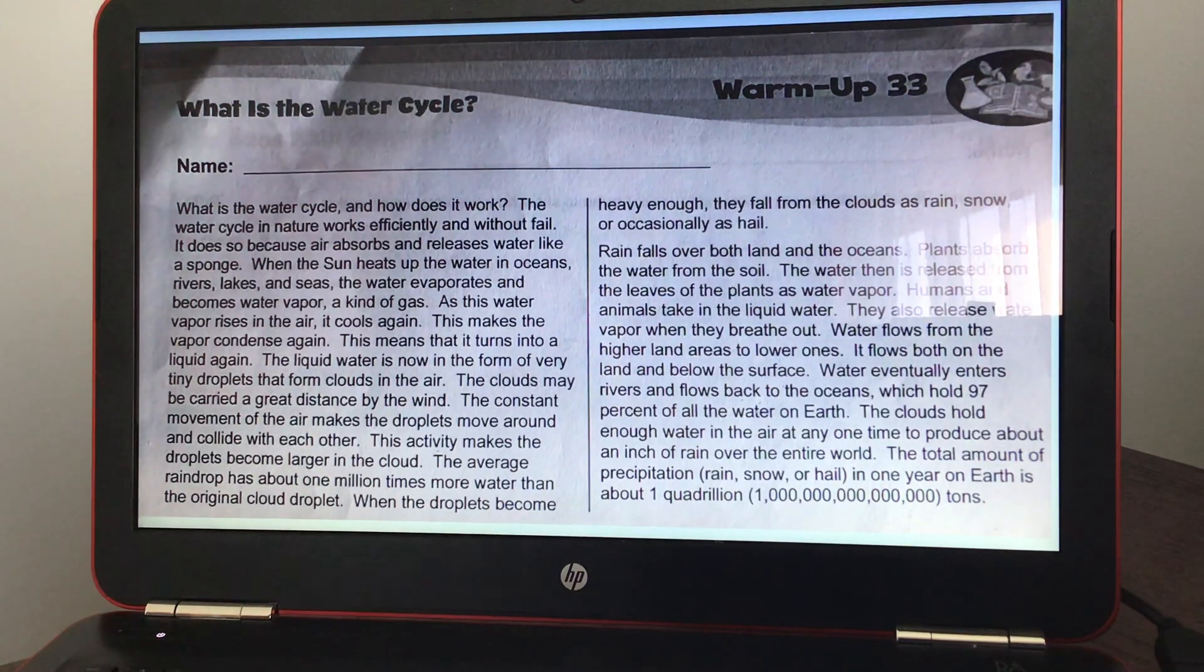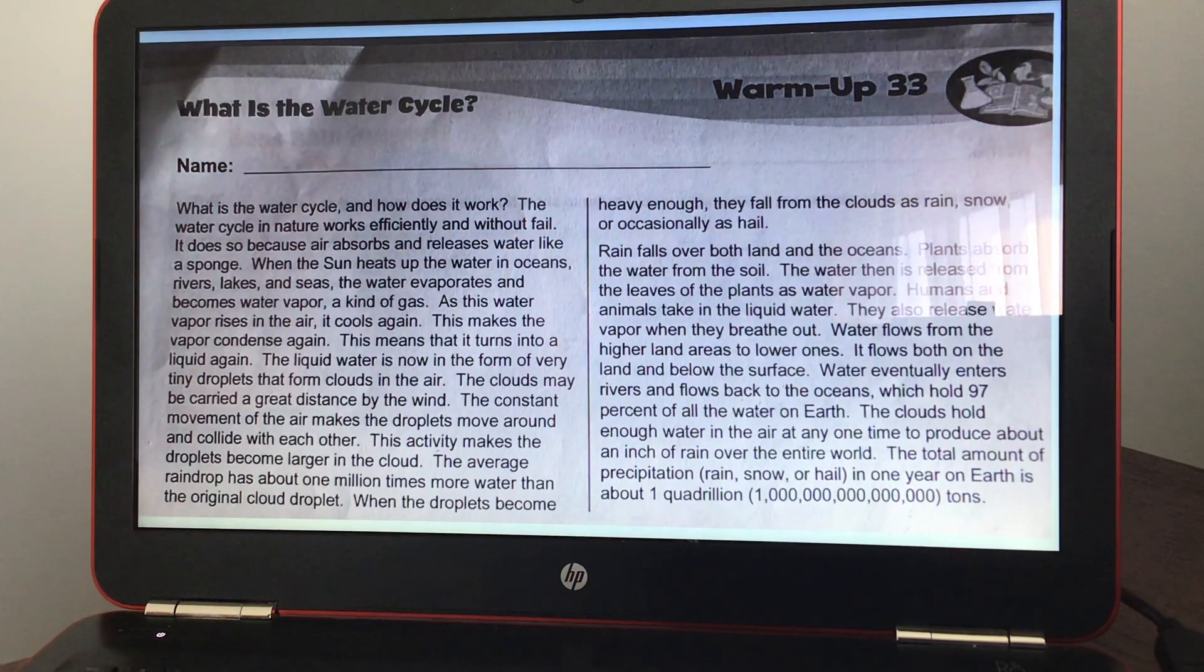What is the water cycle and how does it work? The water cycle in nature works efficiently and without fail. It does so because air absorbs and releases water like a sponge. When the sun heats up the water in oceans, rivers, lakes, and seas, the water evaporates and becomes water vapor, a kind of gas.